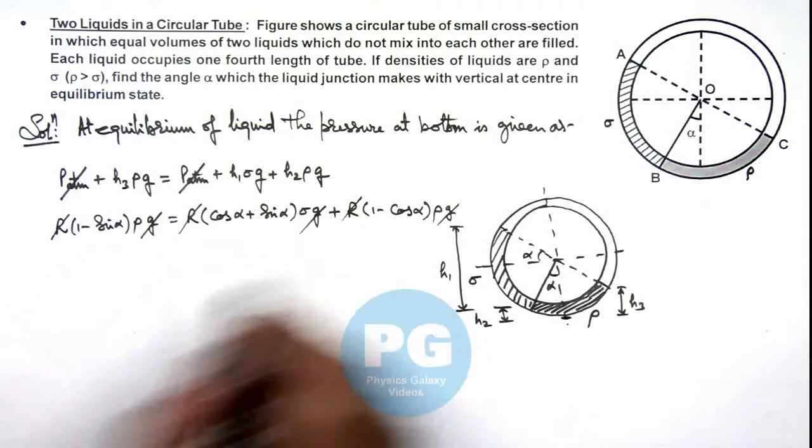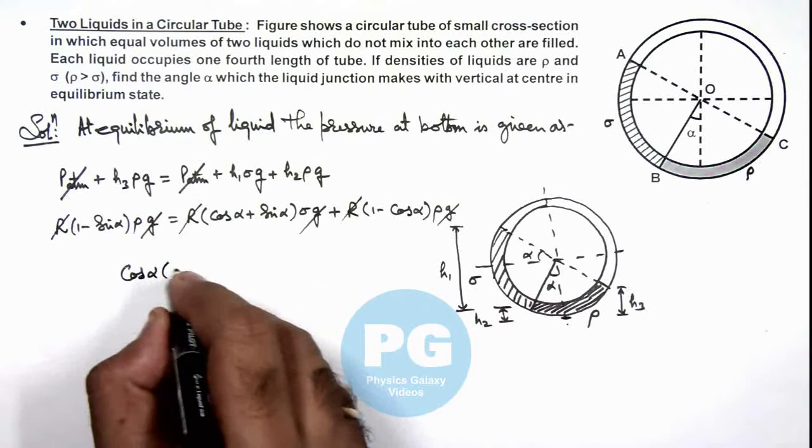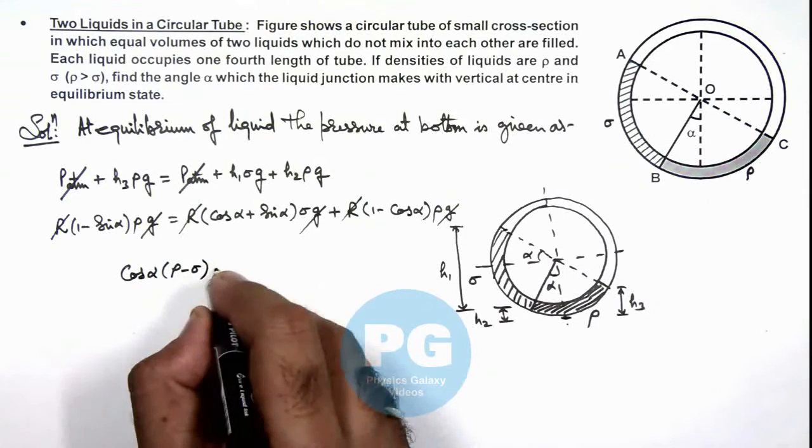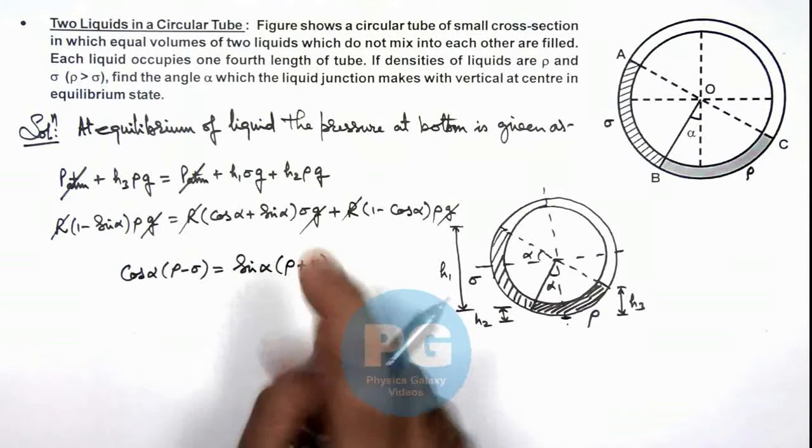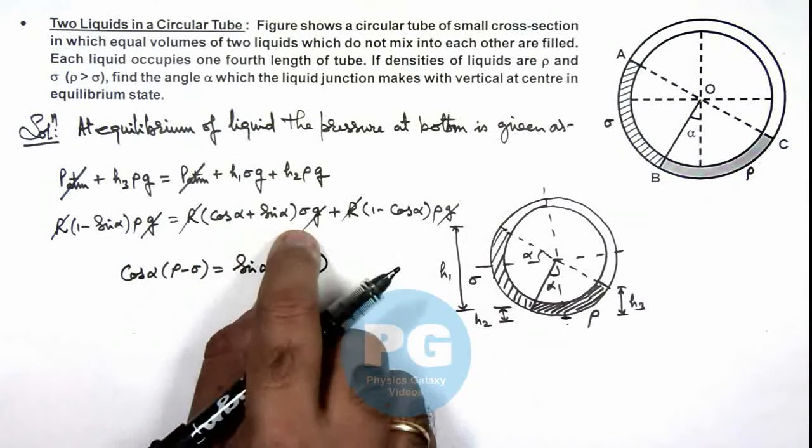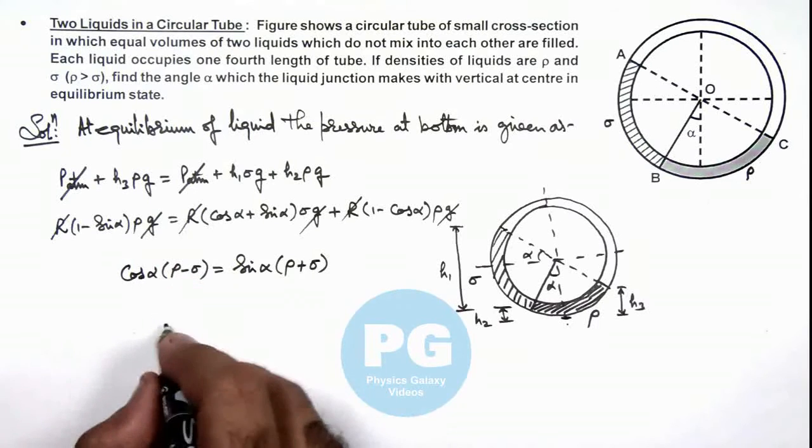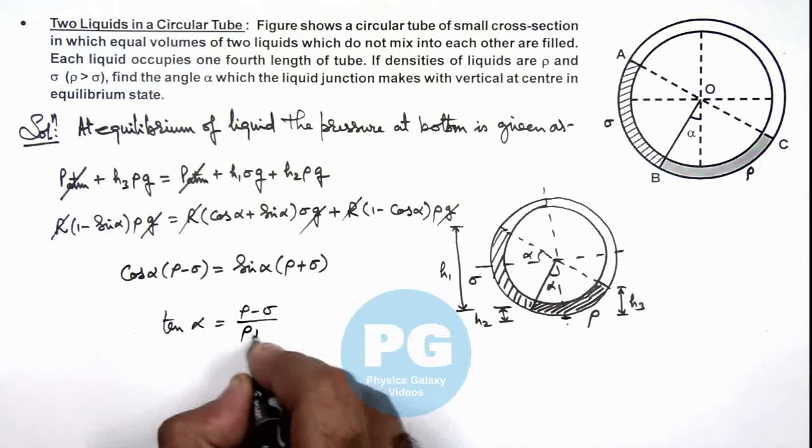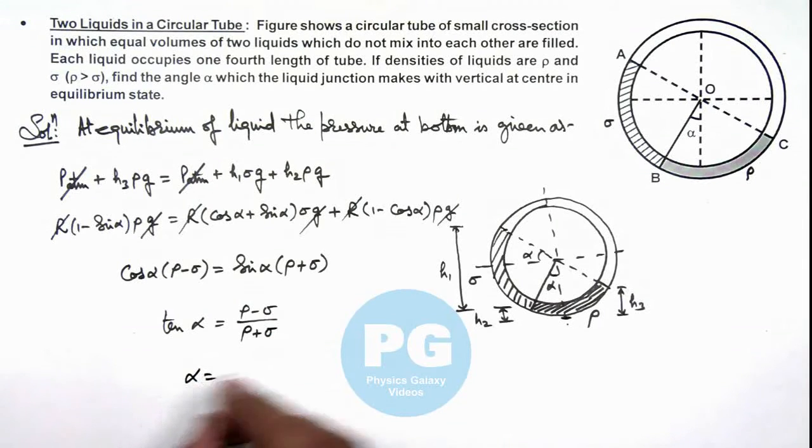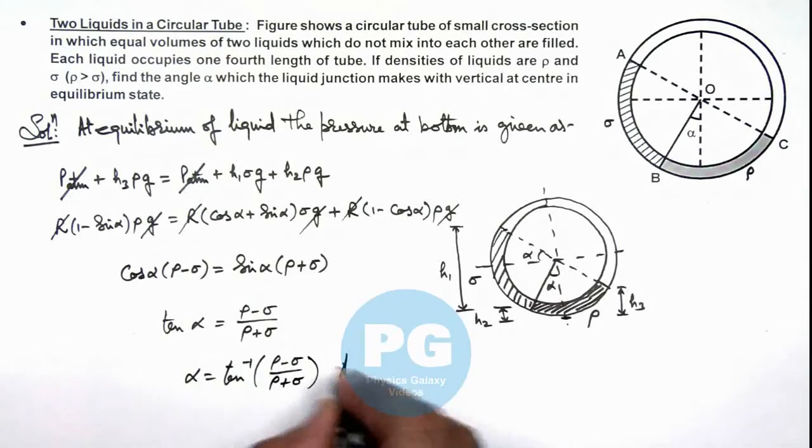Finally, after opening and simplifying, this will give us cos α multiplied by (ρ - σ) is equal to sin α multiplied by (ρ + σ). Here you can take the terms of sin α and cos α on the two sides of equality, so this gives us the value of tan α is equal to (ρ - σ) by (ρ + σ). So the value of α we are getting is tan inverse of (ρ - σ) upon (ρ + σ). That is the result of this problem.